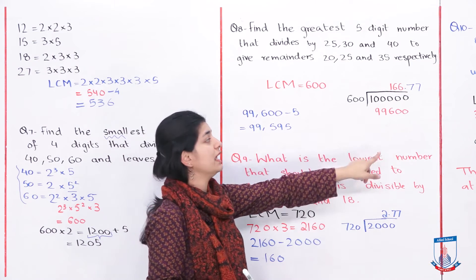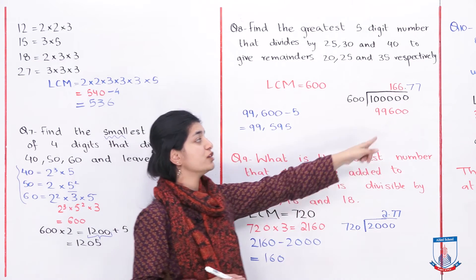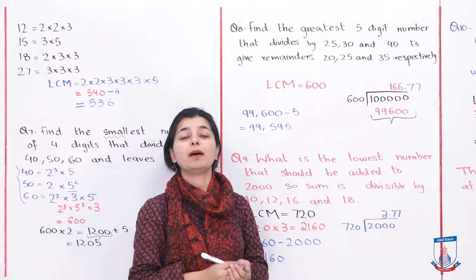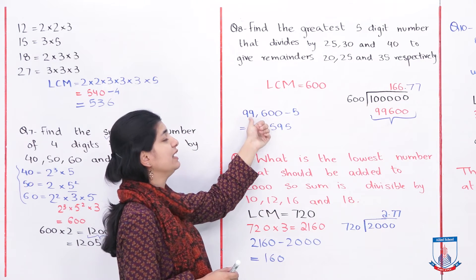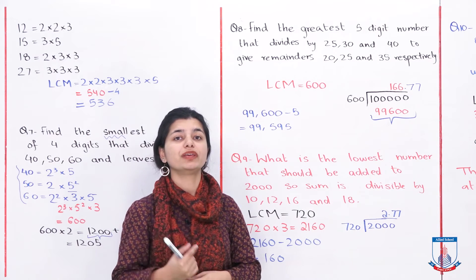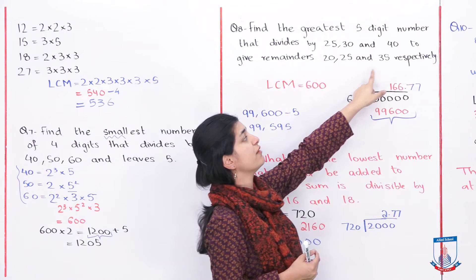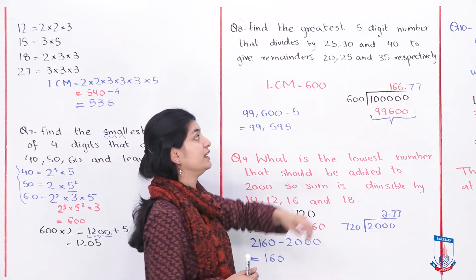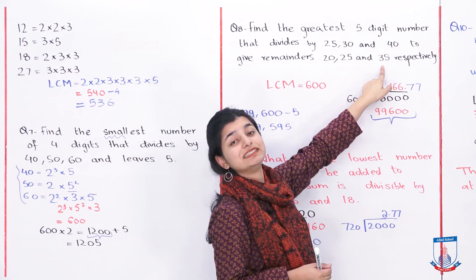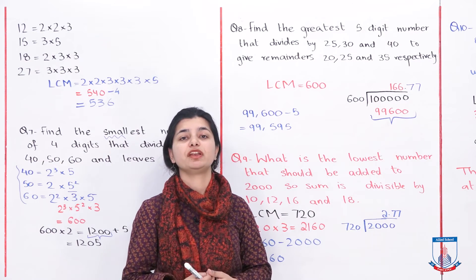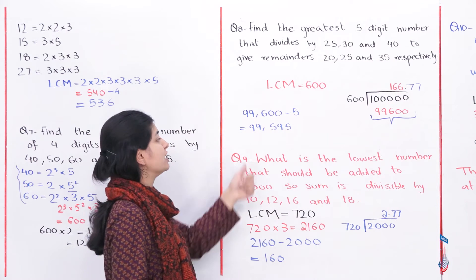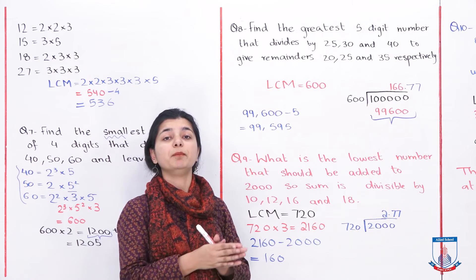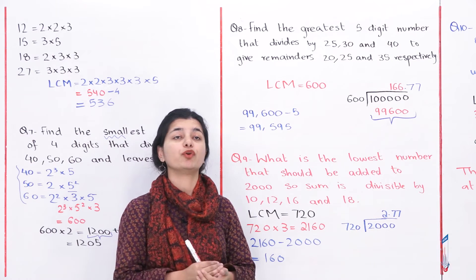99,600 is in the multiplication table of 600, but 100,000 is not. So our largest 5-digit multiple of 600 is 99,600. Now, looking at the remainders — 20, 25, and 35 — we observe that 25 minus 5 is 20, 30 minus 5 is 25, and 40 minus 5 is 35. So we subtract 5 in each case, just like we solved question number 6. Therefore, we subtract 5 from 99,600, giving us 99,595 as our final answer.